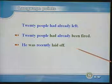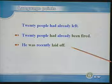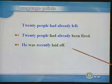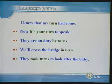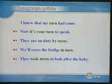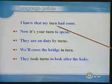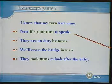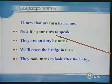解雇还有一个说法是一个词组。比如这个例句:He was recently laid off,也是被动语态。他最近被解雇了。I knew that my turn had come. 我知道,这回该轮到我了。这里的turn意思是轮到我什么了,那么是指轮到他被开除了。Now it's your turn to speak. 现在轮到你讲话了。It's your turn,是轮到你做什么事情。